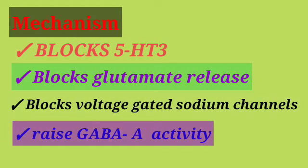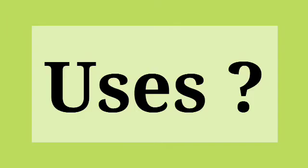The mechanism of action of lamotrigine: it acts by several mechanisms, but the exact mechanism is not known. It acts by blocking 5-HT3 receptors, blocking glutamate release from nerve endings, and blocking voltage-gated sodium channels, thereby showing inhibitory action and also raising GABA-A activity.